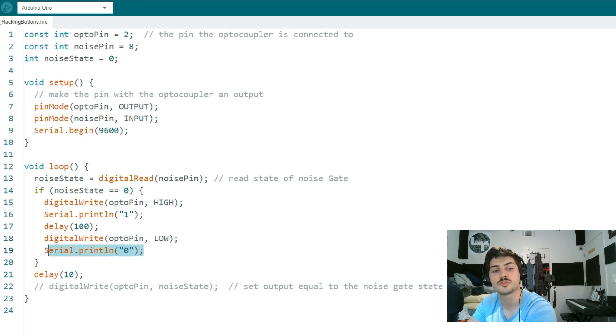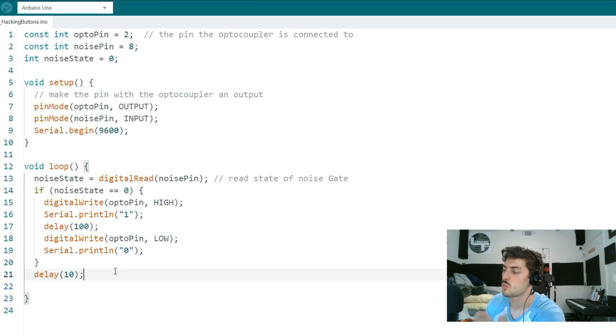I'm just going to delay a tenth of a second or a hundred milliseconds, and then I'm going to write it back to low. So basically that's just one section of turning a button on for a tenth of a second. Then I will print a zero to let me know in the window that it should be back to off.